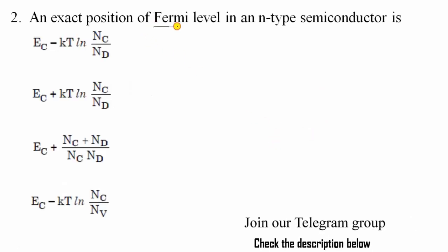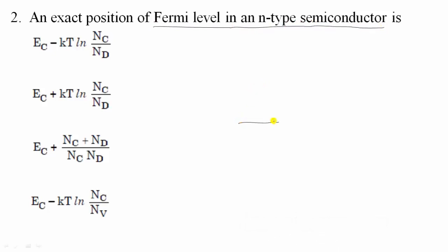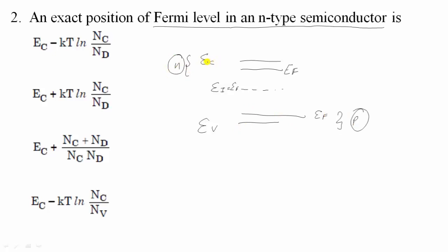Second question: the exact position of the Fermi level in an n-type semiconductor. We have the valence band and conduction band. At absolute 0 Kelvin, the intrinsic level and Fermi level will be in the middle of the conduction and valence bands. In n-type semiconductor, it is close to the conduction band; in p-type, close to the valence band. The formula is: EF = EC − KT·ln(Nc/Nd). Option A follows, where Nc is effective density of states in the conduction band, K is Boltzmann constant, T is absolute temperature, and Nd is concentration of donor atoms.